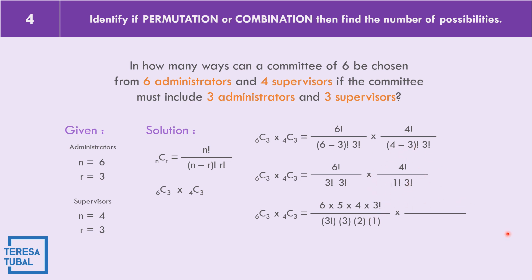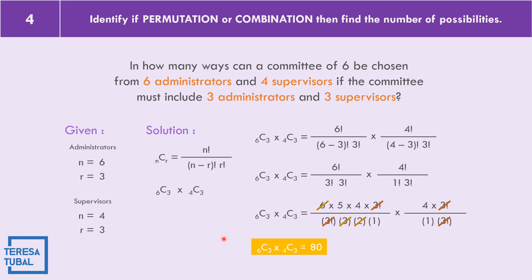Four factorial expands as four times three factorial. We cancel three factorial in both administrator and supervisor expressions. Then three times two equals six, and we cancel six from the numerator. The denominator becomes one. Multiplying the remaining numerator: five times four times four equals 80. So the combinations of six objects taking three at a time multiplied by combinations of four objects taking three at a time equals 80 ways.